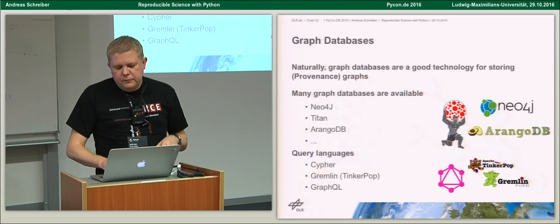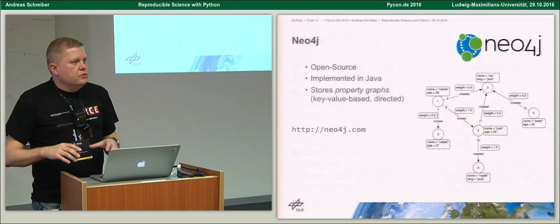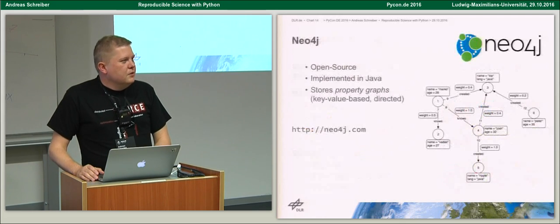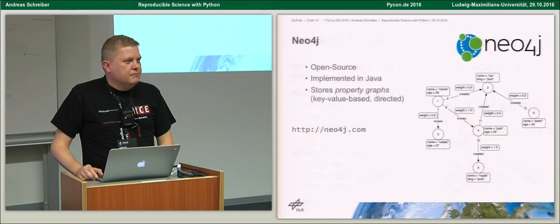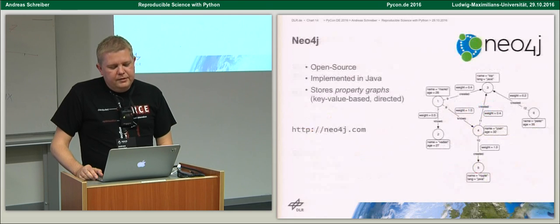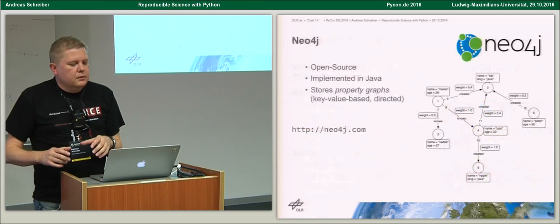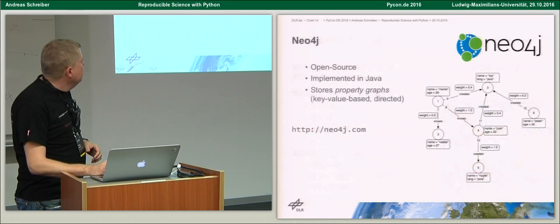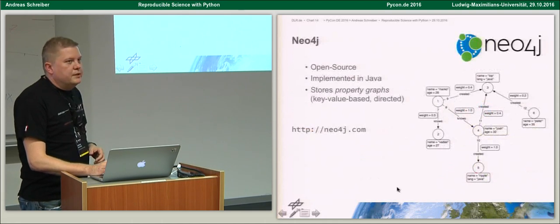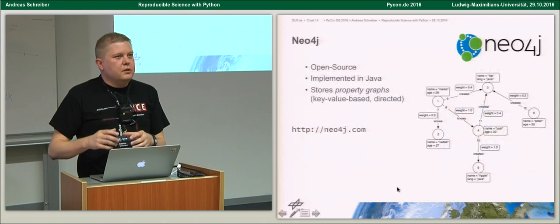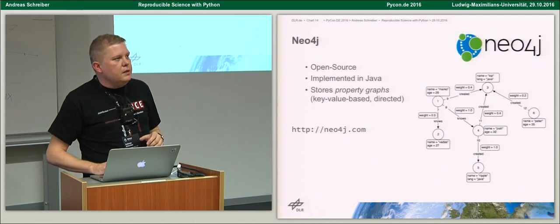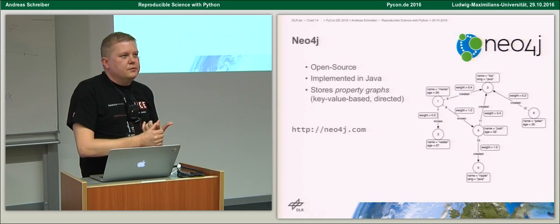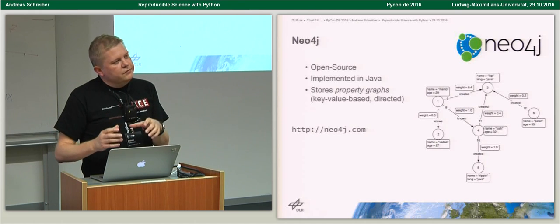For Neo4j, which we use in production settings — it's an open source database implemented in Java — it generally stores property graphs, directed or undirected, together with properties. Each node and each relation can have additional properties. Provenance graphs also have additional properties like meta-information. You can see provenance information as metadata for processes.